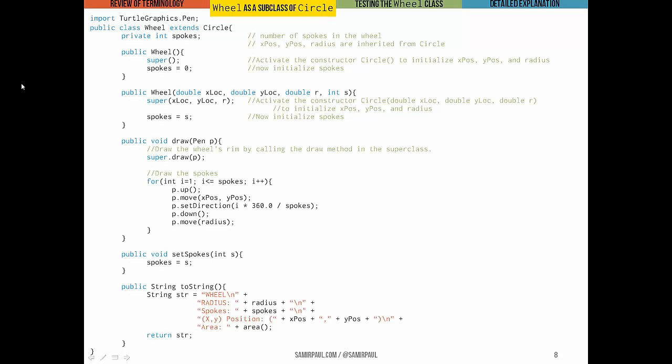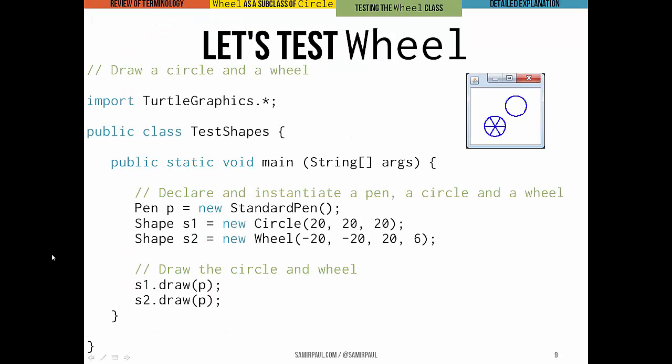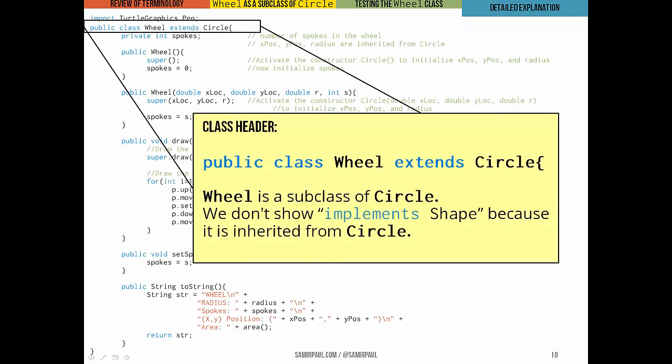And what you can assume is that a wheel inherits all of the variables and methods that a Circle would have had. But let's skip right ahead to our test of the Wheel class. Here we can see all we're doing in this test shapes class and the main method. We're making a pen. We're making a circle that we'll point a shape variable at, and we'll make a wheel that we'll point another shape variable at, and then we'll draw both. And the end result is something that looks like this. This is in the code example. You can try it for yourself if you would like. But let's dive into a more detailed explanation of the Wheel class so we can really see how the inheritance works.